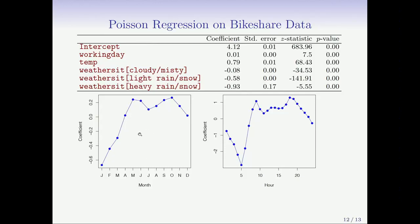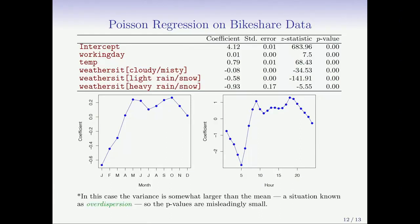Dot plots of the estimated effects for month and hour look similar to those from the linear model. However, in this case the variance is actually somewhat larger than the mean. The Poisson assumes variance equals mean, but having larger variance is a well-known situation called over-dispersion. The p-values in the summary table are misleadingly small as a result, but corrected p-values can be obtained by accommodating this over-dispersion.